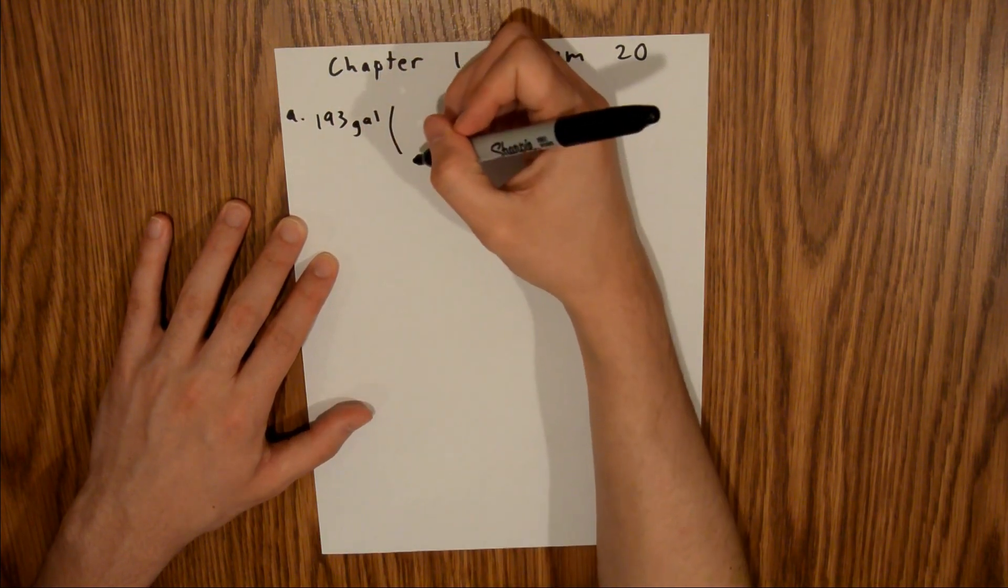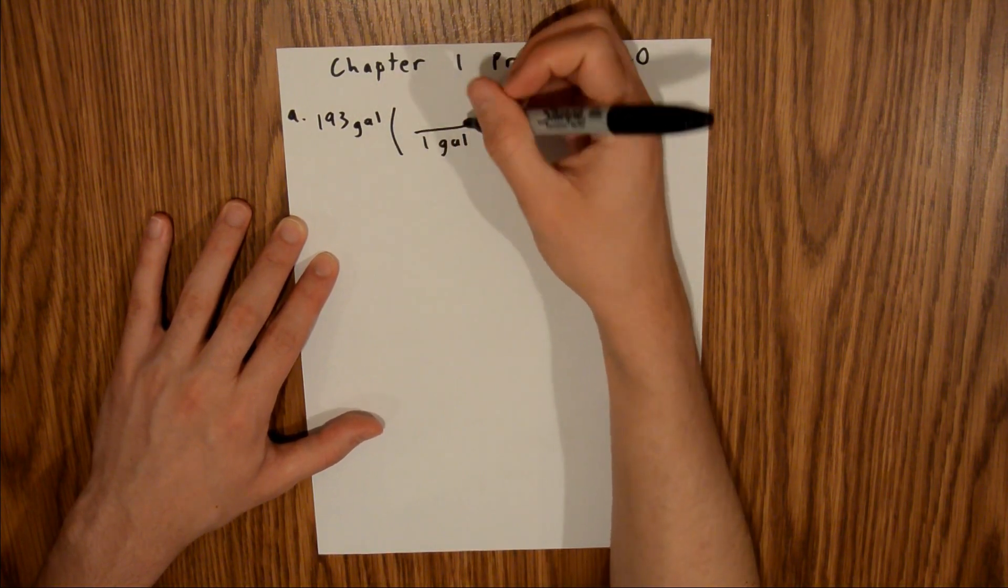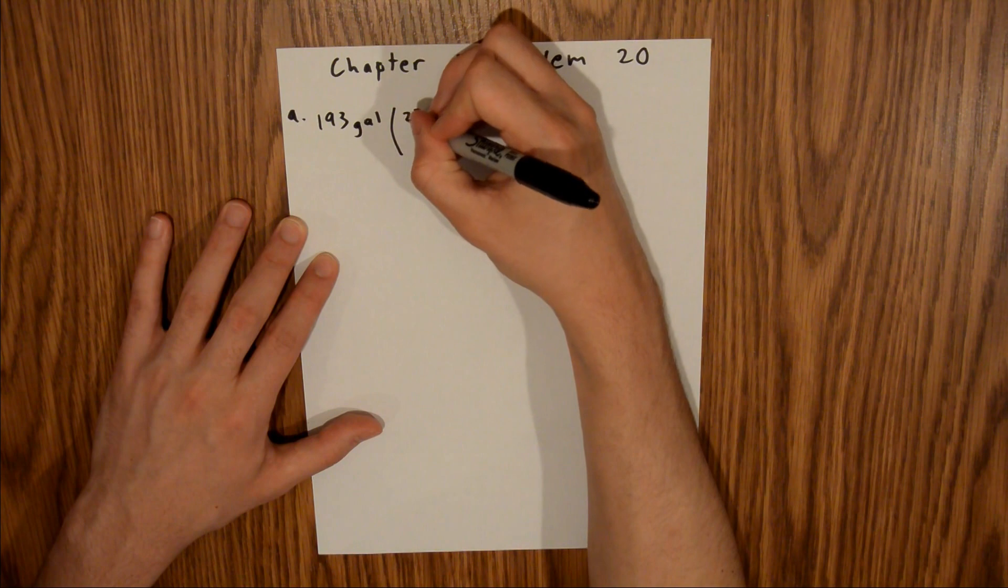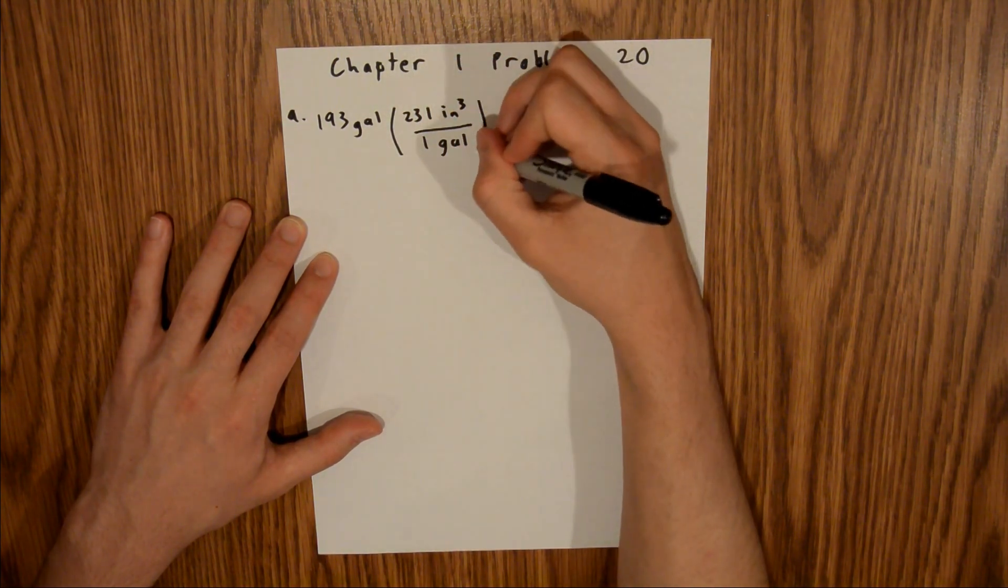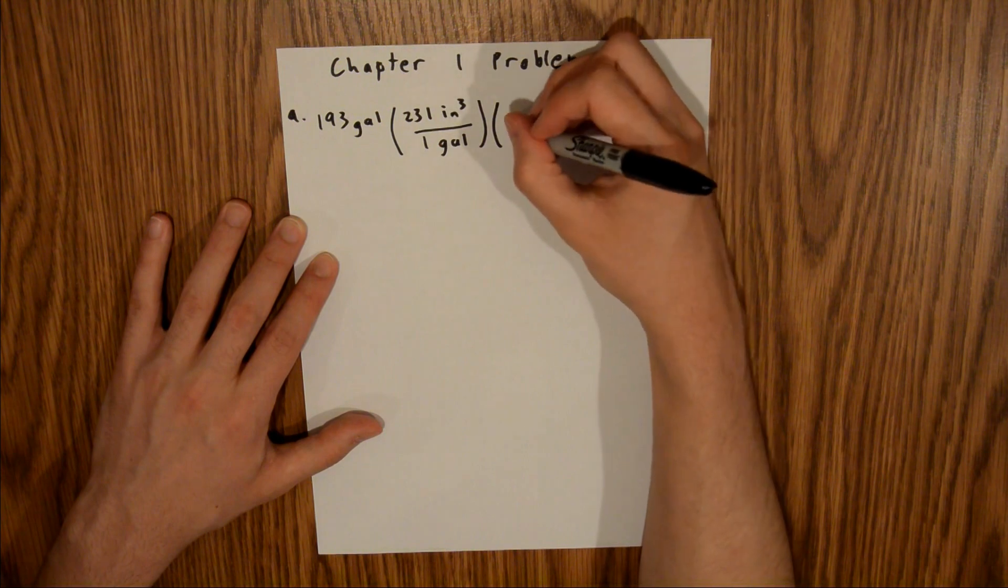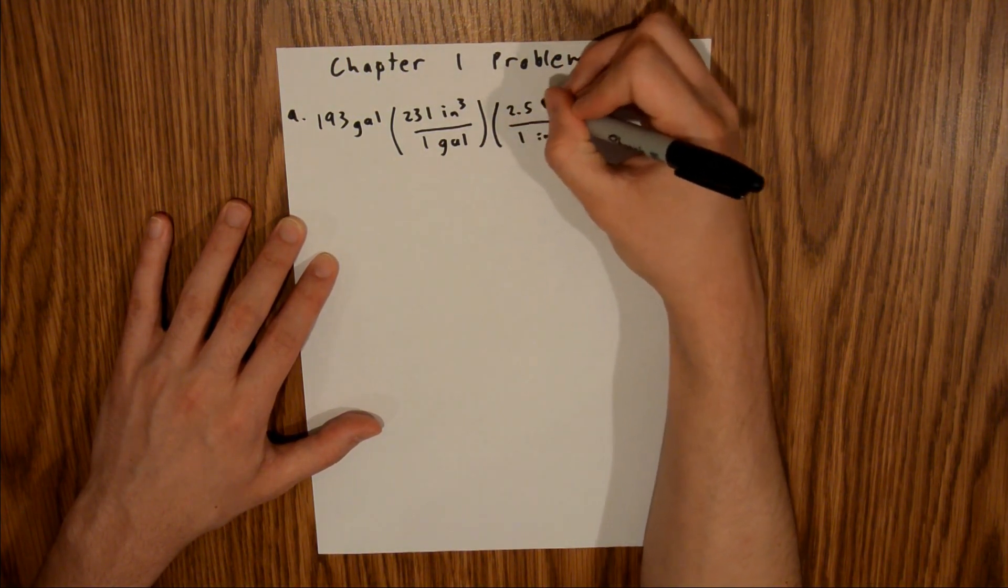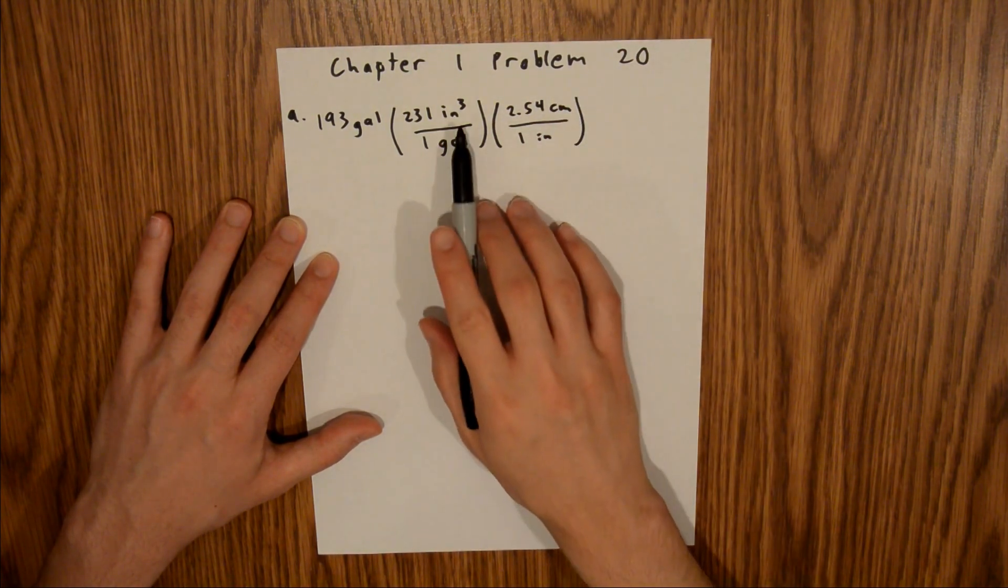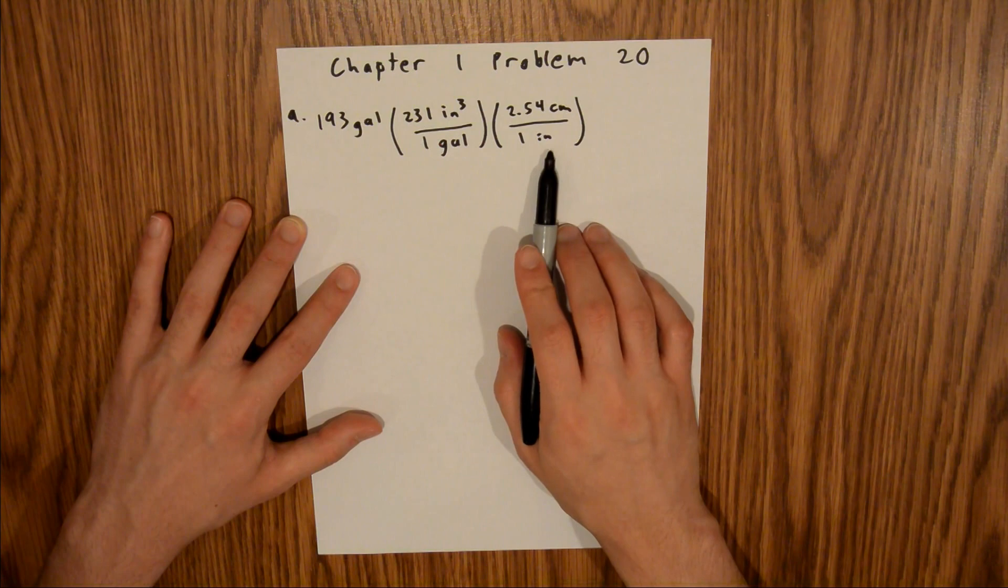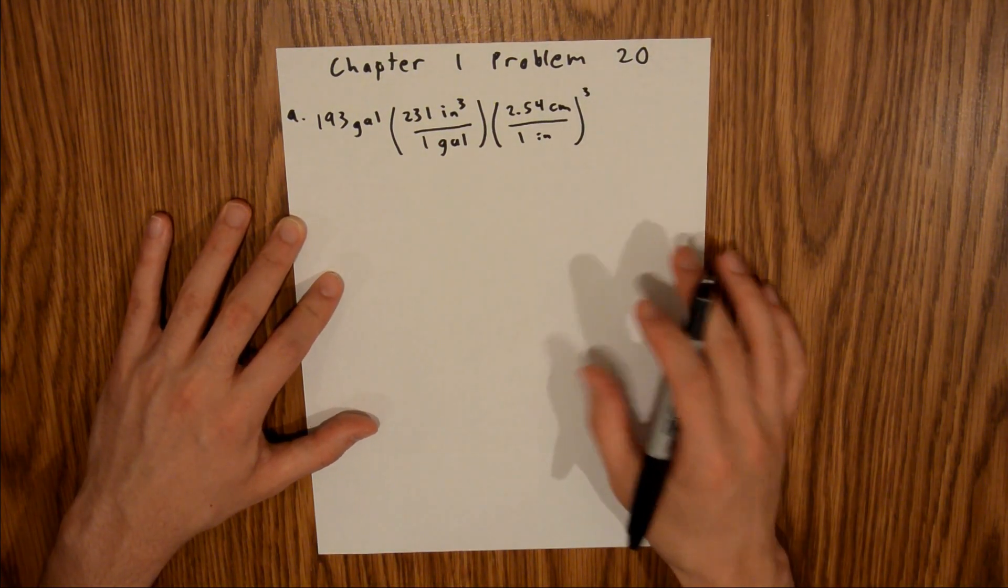And we know that 1 gallon is 231 cubic inches, and we know that there is 1 inch in 2.54 centimeters, and in order for these units to work out, we have inches cubed here and inches here, so we'll have to cube this entire term, and that'll leave us with cubic centimeters.